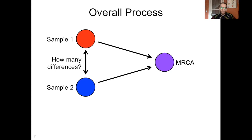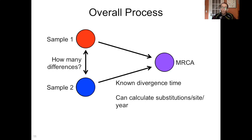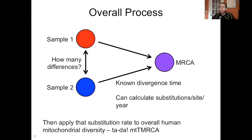So the overall process is this: you have your two samples, you figure out how many differences there are between them, and you work backwards to that most recent common ancestor. We know the divergence time, so we can calculate the substitutions per site per year for that event. We don't expect the human mitochondrial substitution rate to change much over time — it will remain within a range. So we apply that substitution rate to overall human mitochondrial diversity to get the mitochondrial time to most recent common ancestor.